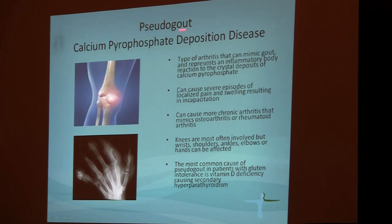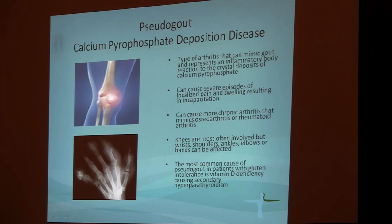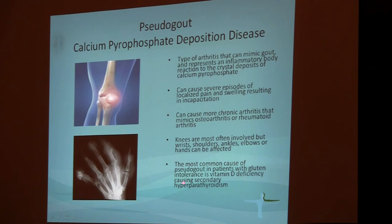Finally, let's briefly talk about pseudogout — a condition well recognized by rheumatologists but relatively unknown in general practice. It's a condition where calcium pyrophosphate is deposited in various joints. It is a form of arthritis and the presentation is often very similar to gout, hence the name pseudogout. The disease presents as painful bouts of pain affecting the knees and hands, and if left untreated, it can destroy joints because calcium crystals grow inside the joints and can completely destroy bones. Knees are most often involved, but wrists, shoulders, ankles, elbows, and hands can also be affected. In patients with gluten intolerance, the most common cause of pseudogout is vitamin D deficiency and elevated parathyroid hormone. If the disease is due to gluten intolerance, it can be treatable and a gluten-free diet can make a huge difference.